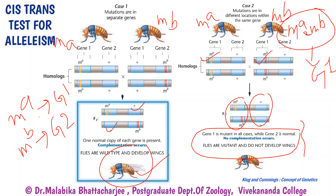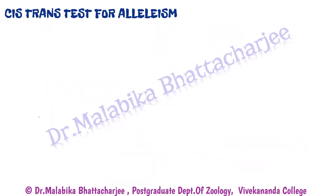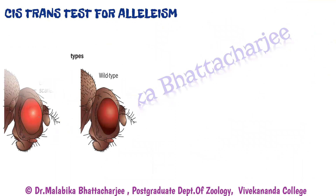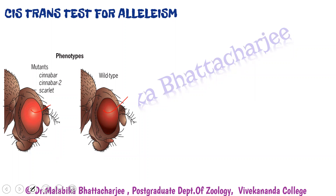Just remember: if two mutant flies are crossed and we get a wild type product, then we assume the two mutations are in two separate genes. That is the crux of the cis-trans test for allelism. I will show it through an example. We have three categories of mutants with respect to Drosophila eye color — cinnabar, cinnabar 2, and scarlet — that are phenotypically identical. The question is whether cinnabar, cinnabar 2, and scarlet are mutants of the same gene or present in two different genes.